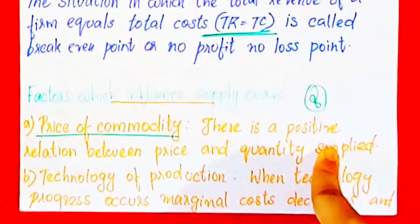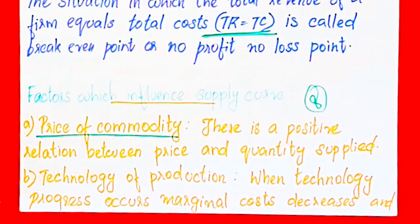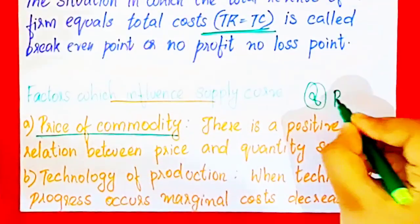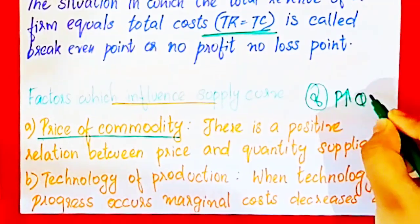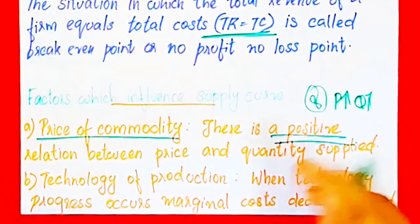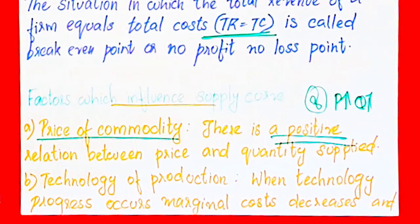There is a positive relation between price and quantity supplied. When the price of the commodity rises, quantity supplied also rises. Price increases and quantity also increases — this is a positive relation.